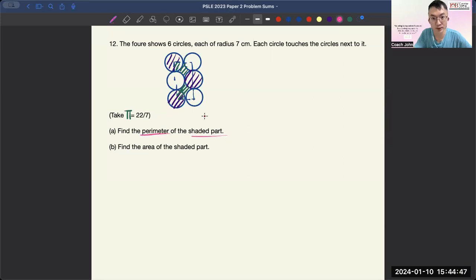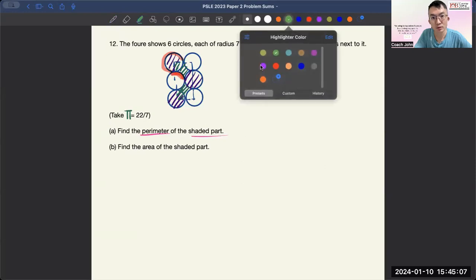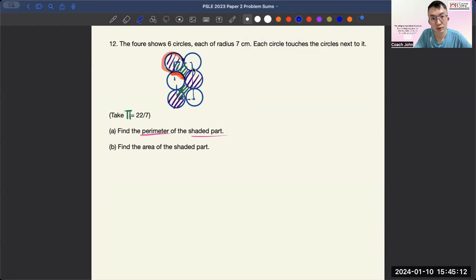The perimeter of the shaded part will be like this. We have one circle, one full circle. Even though it's supposed to be up like that, I want to count it as one full circle by doing a bend here. Then the other one will be another full circle like that. Then this is another quadrant and then this is a full circle.